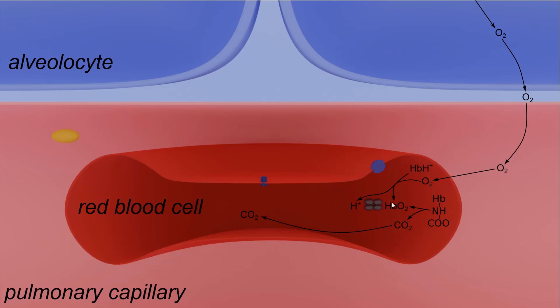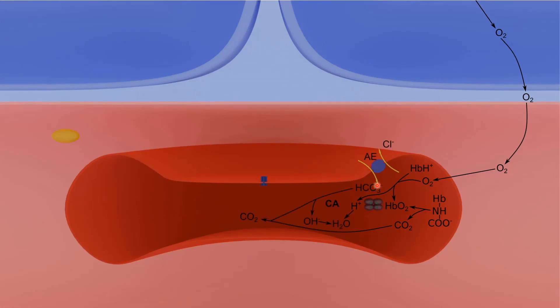Bicarbonate ions enter erythrocytes from the anion exchanger in exchange for chloride ions. In the cytoplasm, HCO3- dissociates into hydroxide ion and carbon dioxide. This reaction is also catalyzed by carbonic anhydrase. The resulting CO2 leaves red blood cells via AQP1, then moves to alveolocytes through the interstitium and is evacuated into alveolar gas.